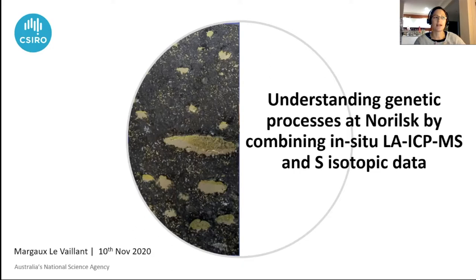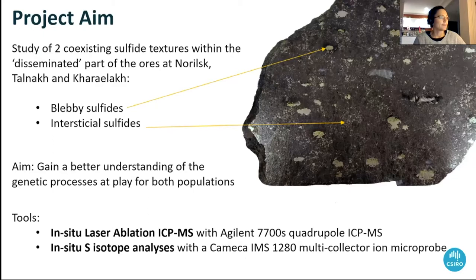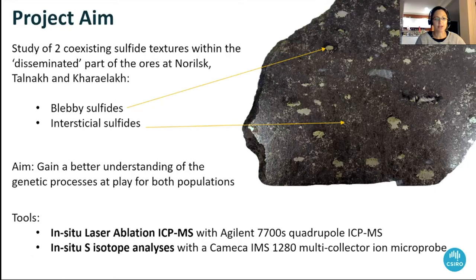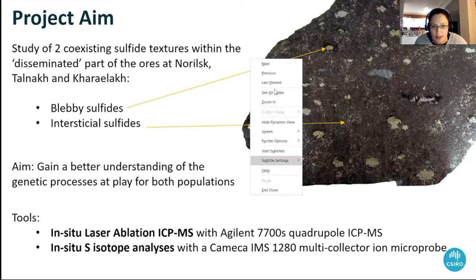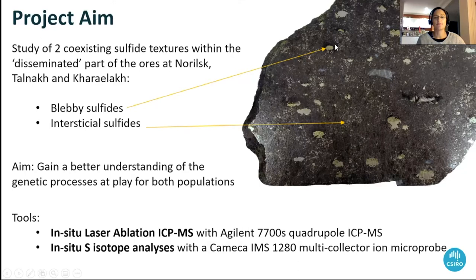The aim of this study was to try and gain a better understanding of genetic processes at Norilsk through the use of two different tools in particular: in-situ laser ablation ICP-MS and in-situ sulfur isotope analysis on the same sulfides. So these are the blebby sulfides I'm talking about, and these are the coexisting interstitial sulfides. Those are the two textures we're going to look at.